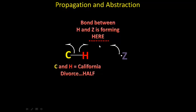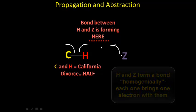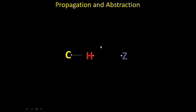These two arrows pointing toward one another mean that H and Z are going to make a bond between themselves. When you see these two arrows pointed toward one another, the electron coming from here and the electron Z is donating are going to come together to make a bond between H and Z. Now carbon has an unpaired electron, so I've created a new radical through abstraction of a hydrogen from carbon.